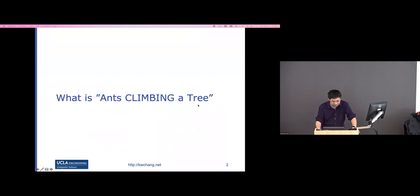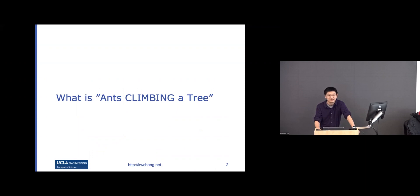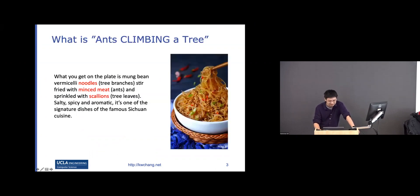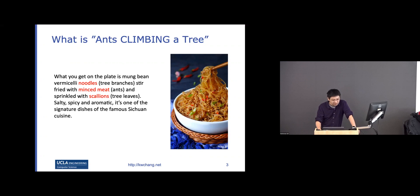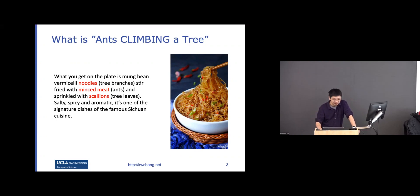Do you know what 'ants climbing a tree' means? It's actually a Chinese dish. Just from the name, you probably won't make the connection. But if you see the description from Wikipedia, it describes a plate with noodles that looks like a tree trunk, and minced meat that looks like ants climbing the tree, with some vegetables as tree leaves.